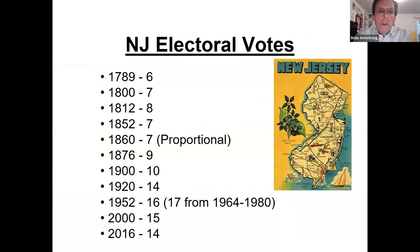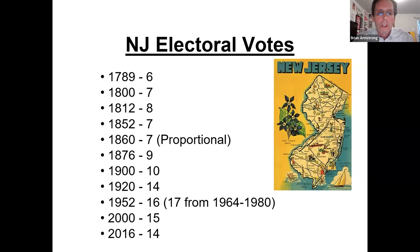This is the New Jersey electoral votes over time. In 1789 there were six electoral votes for New Jersey, and it built up until the 1964 to 1980 period, where we had our peak at 17. Since then we've gone down to 14, consistent with what we had in 1920.